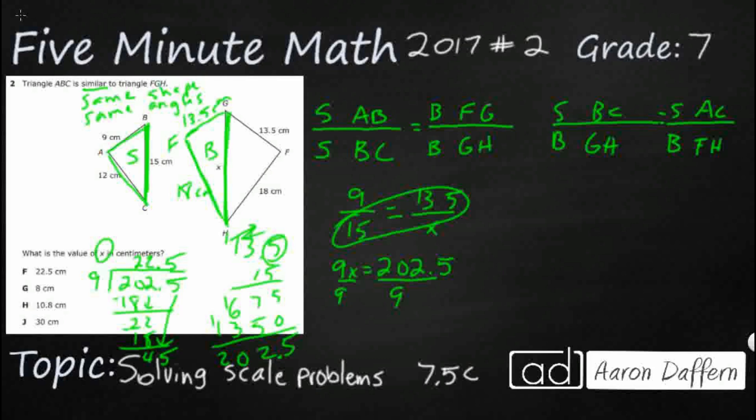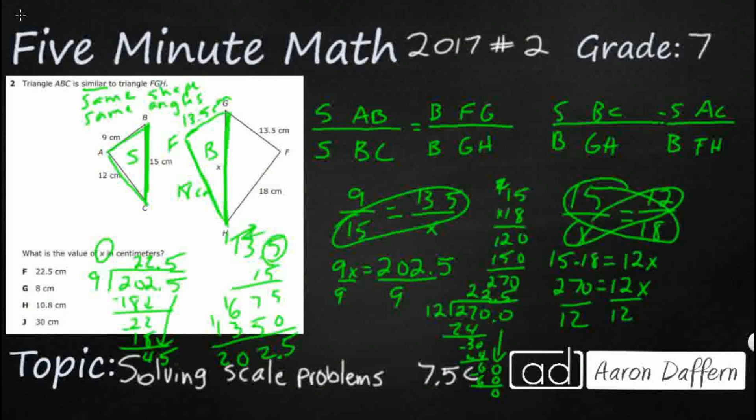Now I said we could do it the other way and let's see what that looks like. If we set this other one up, it's 15 over x equals 12 over 18. So we need to multiply those together. We end up getting 270 equals 12x. We divide both sides by 12 and we get 22.5. Same answer of F.